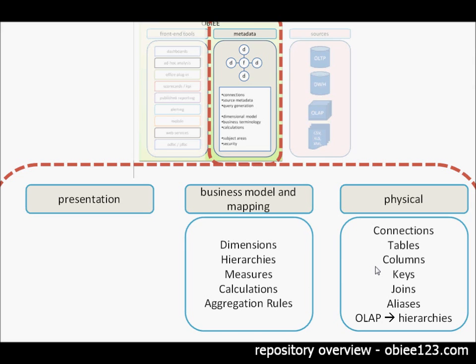Of course, OBIEE needs to know how this model is mapped onto the physical sources so that's why it's also called a mapping layer and it contains mappings onto the physical data.